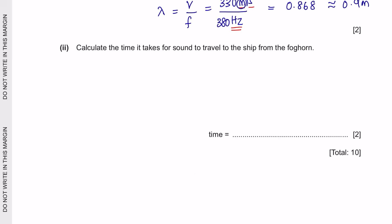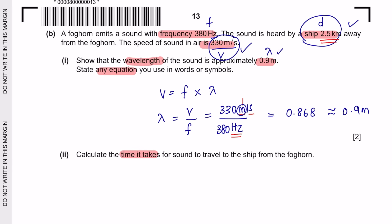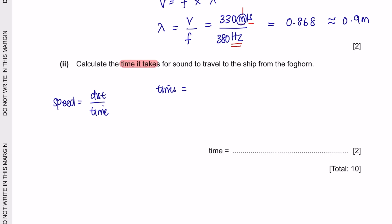Next part two, calculate the time it takes for sound to travel to the sheep from the foghorn. So what we have here is velocity, distance and we're looking to find time. Rearranging this formula, we would get distance over speed. The distance of the sheep from the foghorn is 2.5 kilometers and the speed given to us is 330 meters per second. So that means your distance of 2.5 kilometers has to be converted into meters, which will be by multiplying 1000, which gives you time in 2 significant figures, 7.6 and the unit would be seconds.